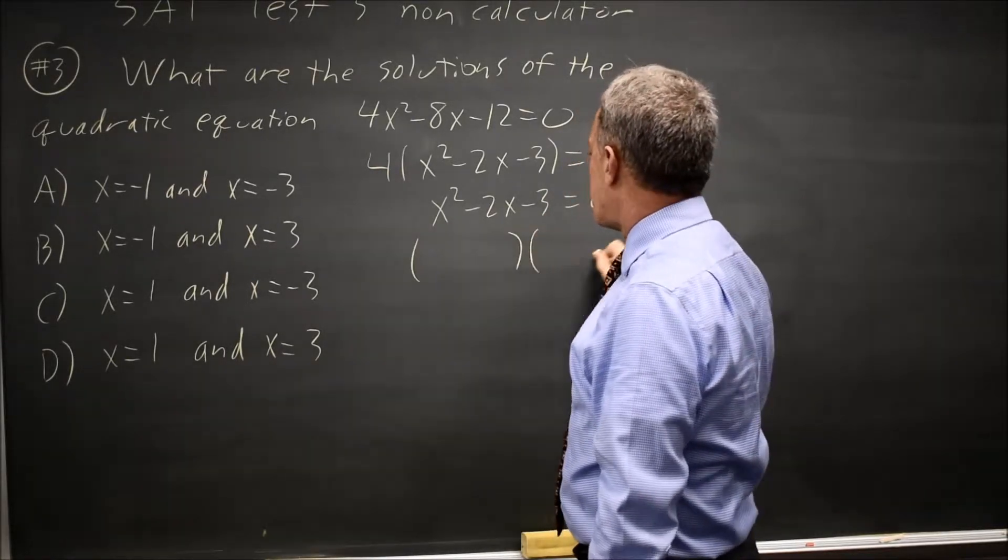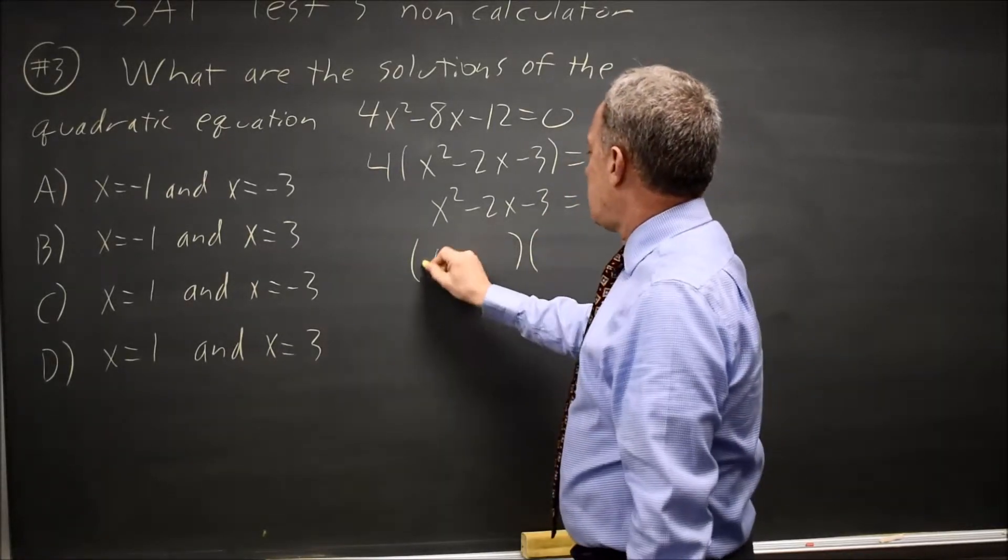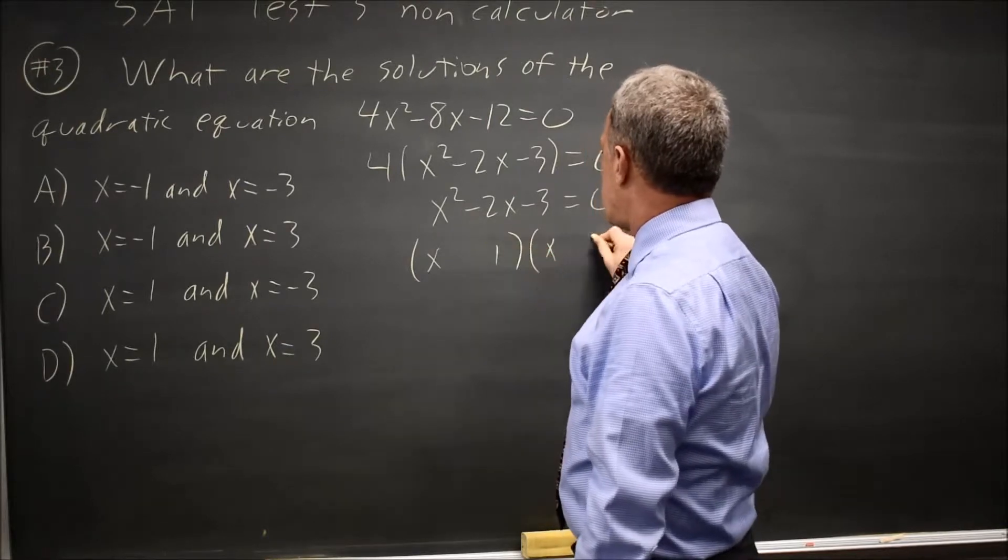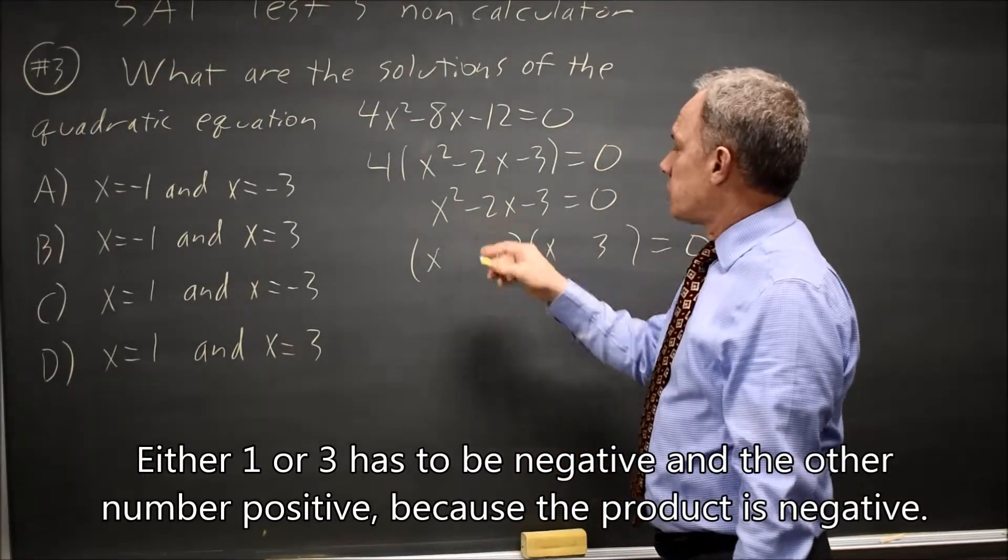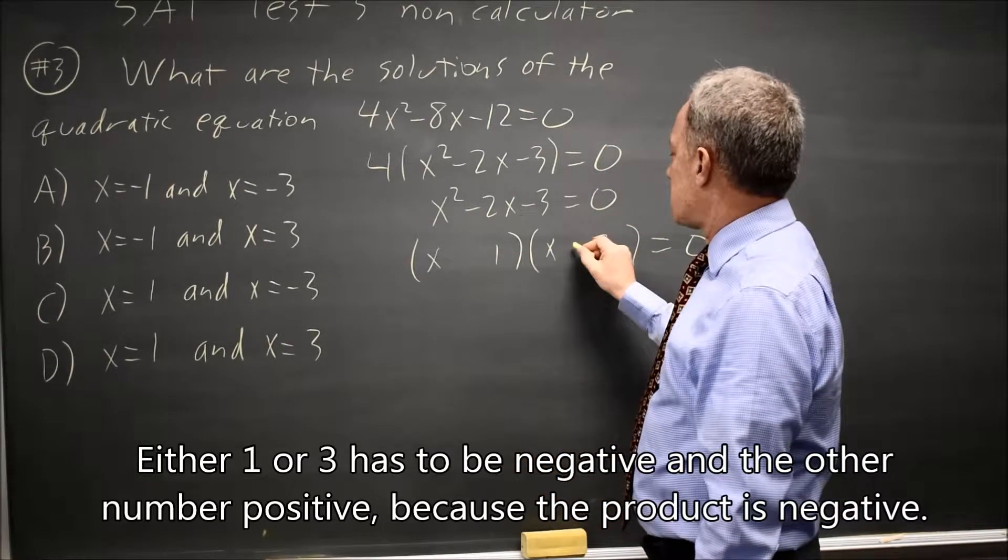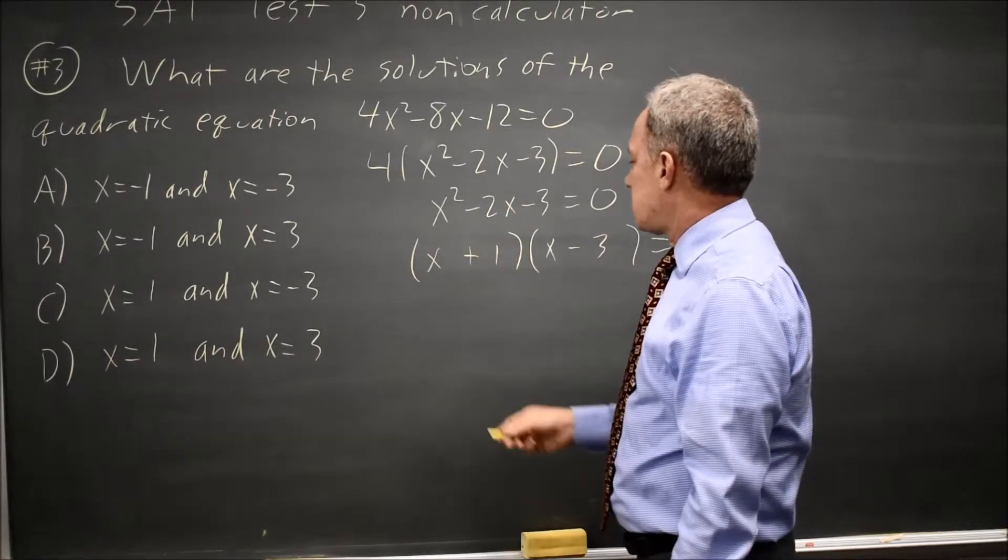And I can factor that, x and x, 1 and 3. Since the middle term is negative 2x, the 3 is negative and the 1 is positive.